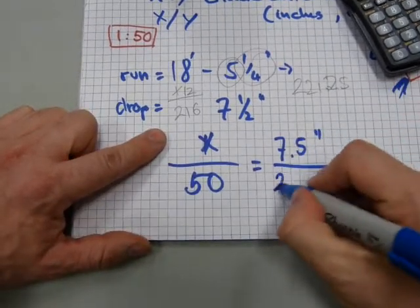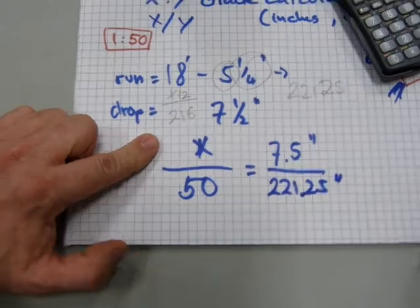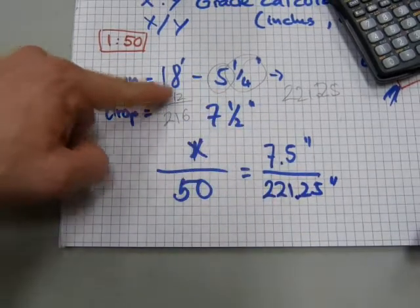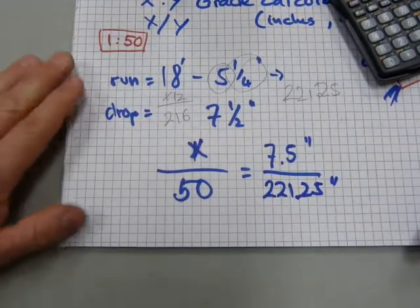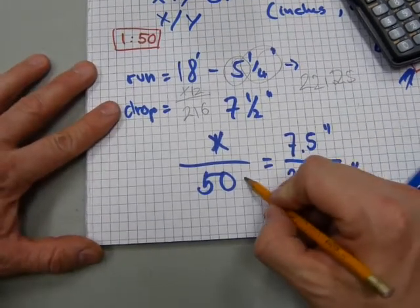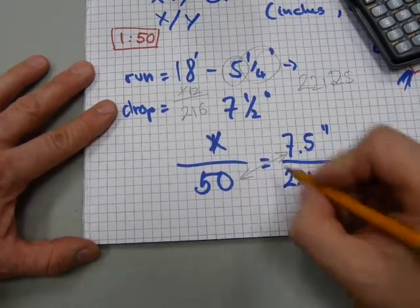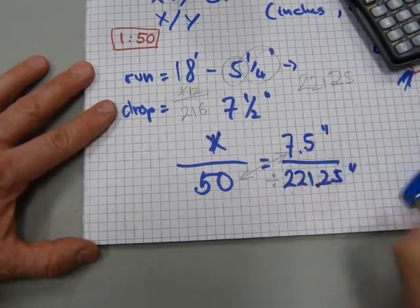221, 221.25. I am working in this case with decimal inches that I made out of this feet and inches measurement. Now, next thing to do is cross multiply, that one with that one, and then do one piece of division, that one.